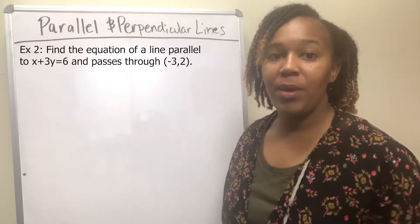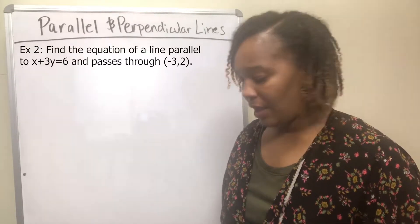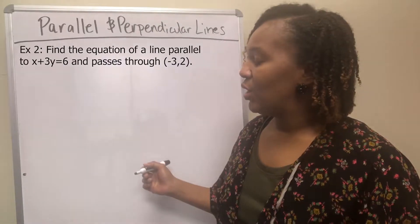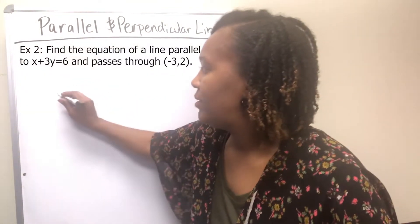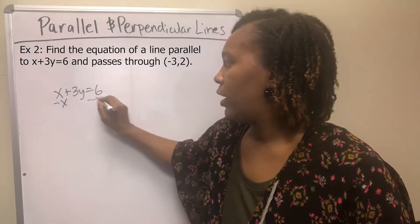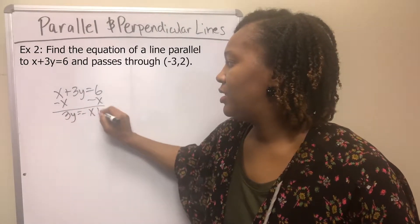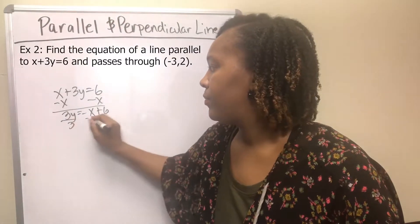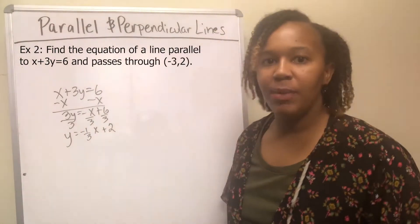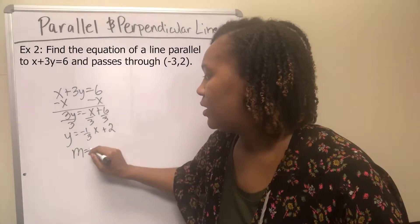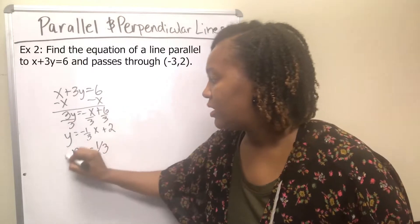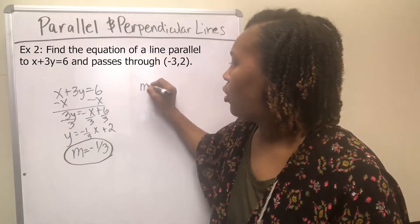For example two, we want to find the equation of a line that passes through the point (−3, 2) and is parallel to the line x + 3y = 6. We have a point and we need a slope, so we find the slope of x + 3y = 6 by isolating y. Subtracting x from both sides gives 3y = −x + 6, then dividing by 3 gives y = negative one-third x + 2. The slope is negative one-third. Since we want a parallel line, we use the same slope: negative one-third.